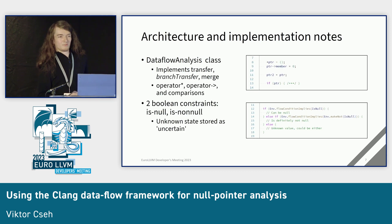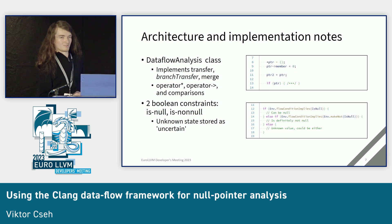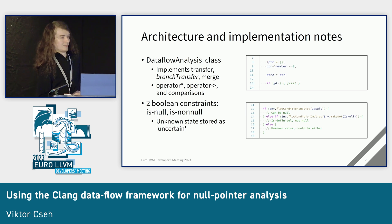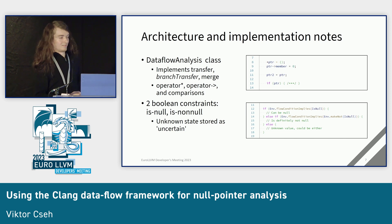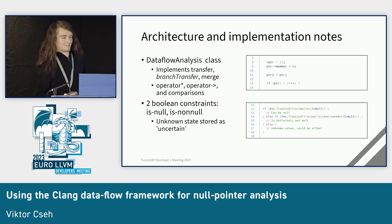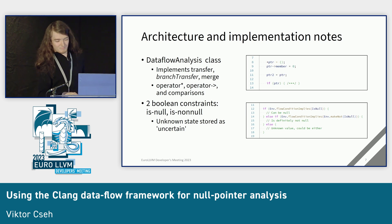For tracking the values of pointers, we decided to store two boolean constraints for each pointer — whether the pointer can be null and whether the pointer can be not null. This allows us to represent states where, for example, with a function call where we don't know anything about the function, the pointer returned by it can be null and can be non-null as well, giving us a finer structure.